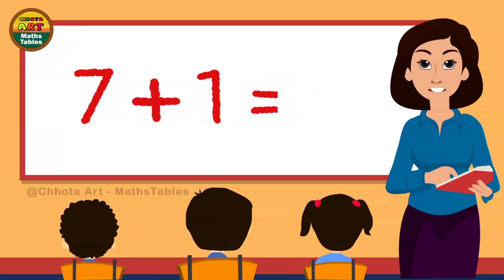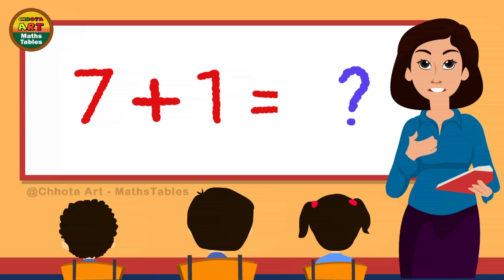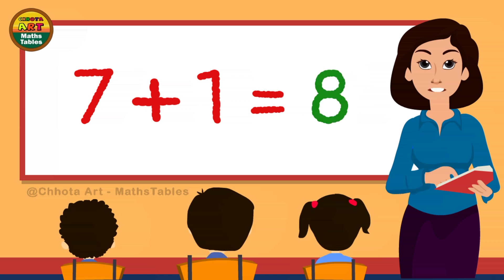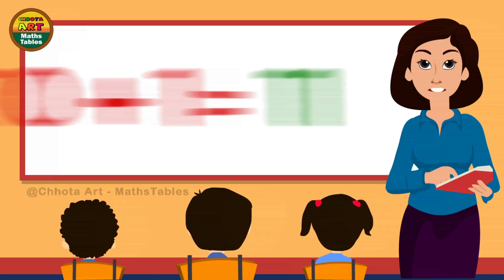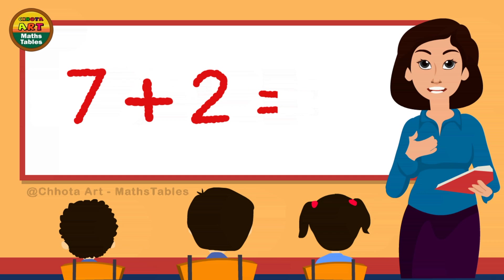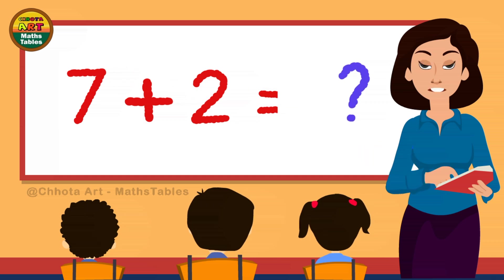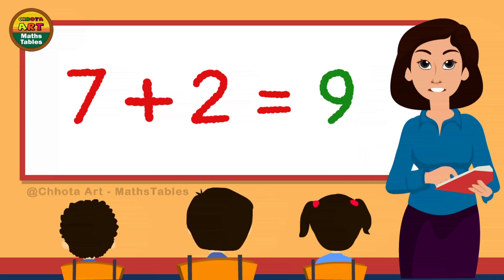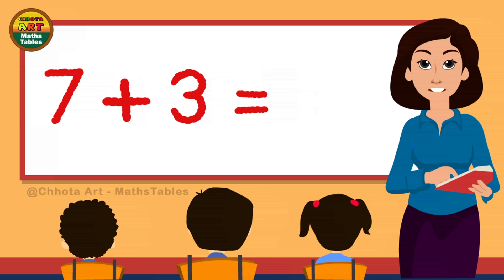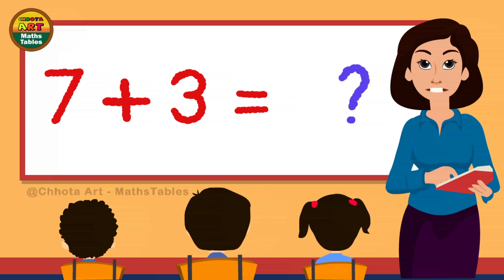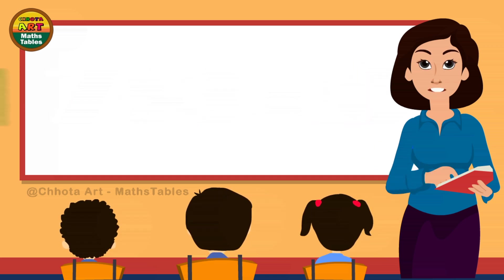7 plus 1 is... 7 plus 1 is 8. 7 plus 2 is... 7 plus 2 is 9. 7 plus 3 is... 7 plus 3 is 10.